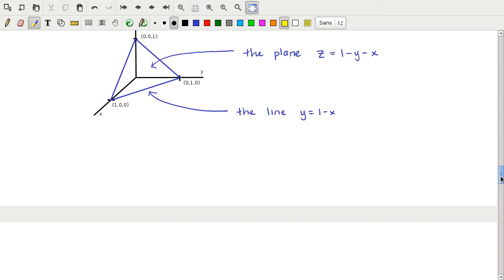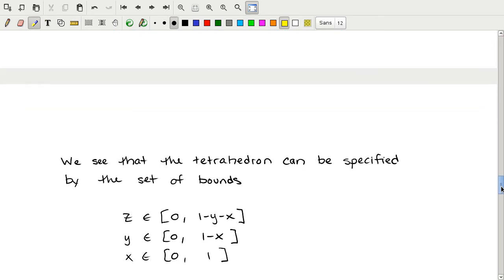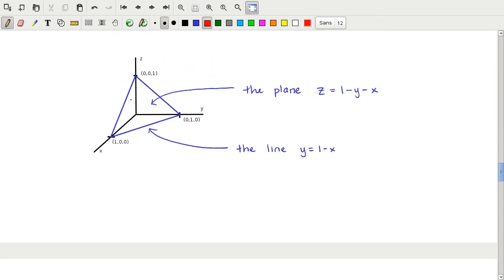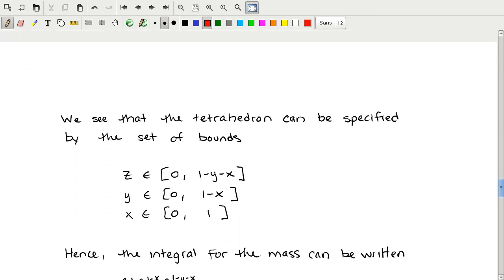This is one equation in three unknowns and gives us a two-dimensional object, the plane. This line here in the xy domain is y equals 1 minus x. To fully specify this three-dimensional object, we can use the three sets of bounds: x goes between 0 and 1; on that domain, x from 0 to 1, y goes from 0 to 1 minus x; and within that triangle on the xy plane, z goes from 0 to 1 minus y minus x. This set of three bounds fully describes the three-dimensional tetrahedron that we are trying to integrate over.